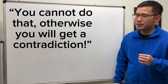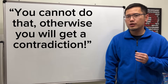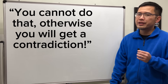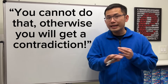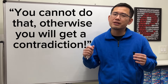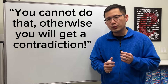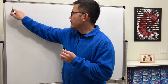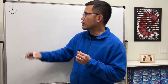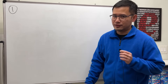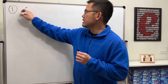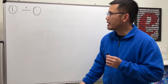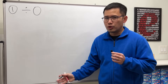You cannot do that because otherwise you will get a contradiction. Let me show you two things that we cannot do in math, because otherwise we'll get something nonsense. For the first one, let's talk about the most famous one, and that has to be dividing by zero.